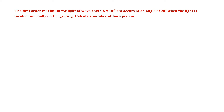The example provided states: the first order maximum of light for a wavelength of 6×10⁻⁵ cm occurs at an angle of 20 degrees when light is incident normally on the grating. We are asked to calculate the number of lines per centimeter. Given data: order n=1, wavelength λ=6×10⁻⁵ cm, and angle θ=20 degrees.